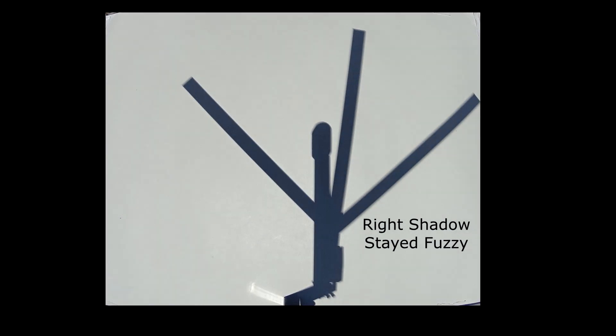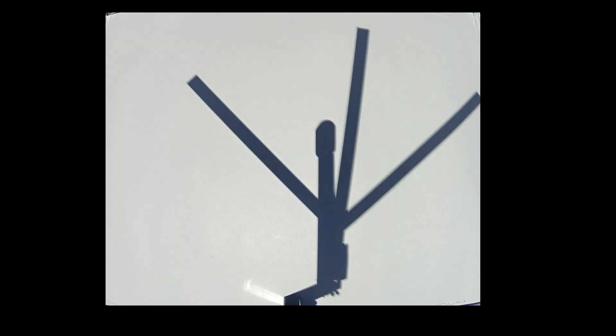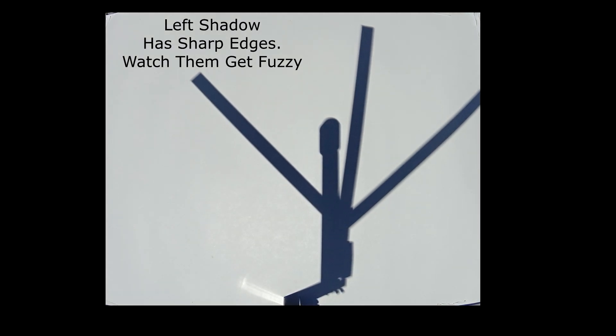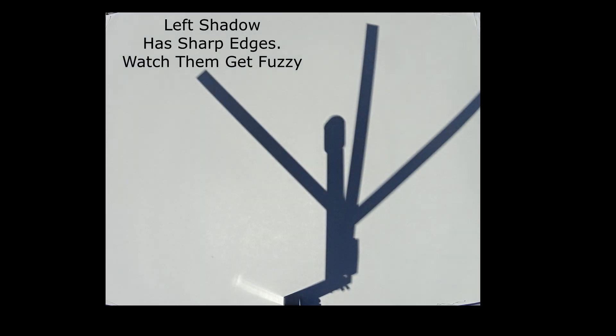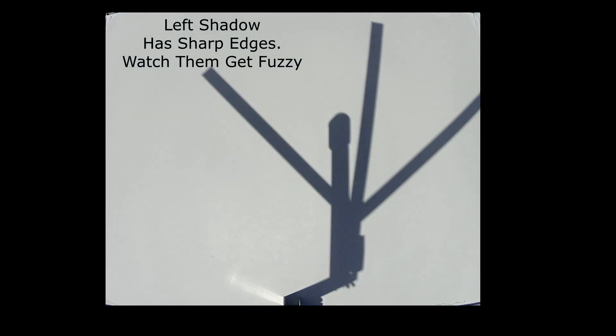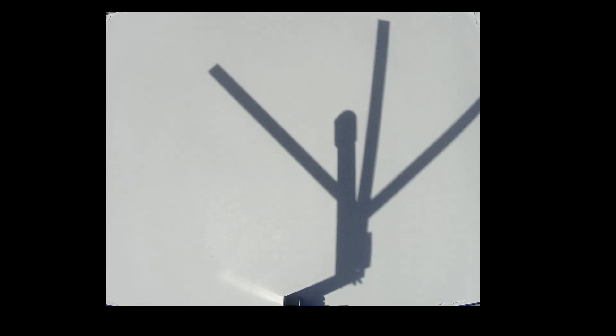Then totality occurs and after totality the left bar has sharp edges but they will get fuzzy as the crescent progresses to a full globe again because now it's an extended source of light again.